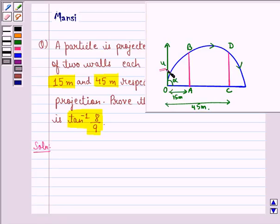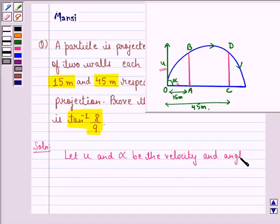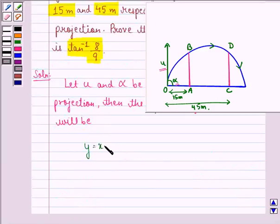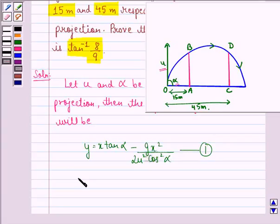First of all, let u and alpha be the velocity and angle of projection. Then the equation of trajectory will be y equals to x tan alpha minus gx square divided by 2u square cos square alpha, and this we call equation 1.